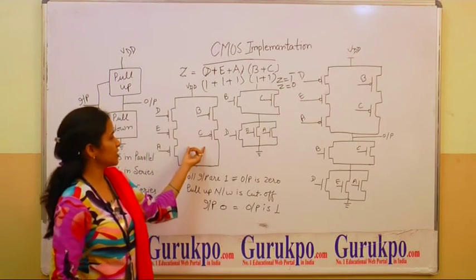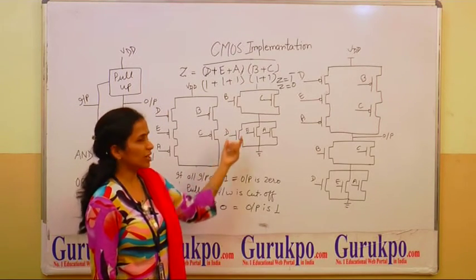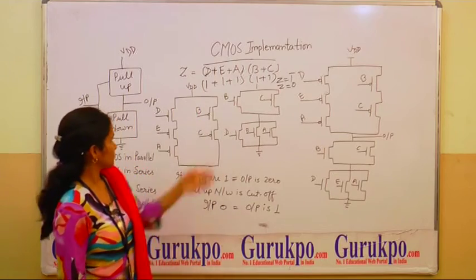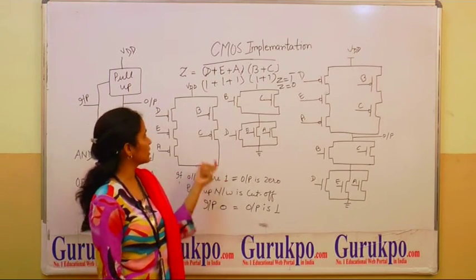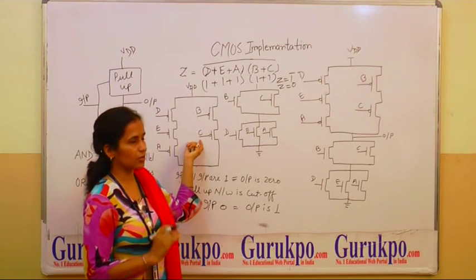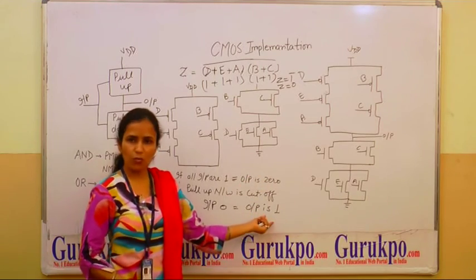Because an NMOS transistor, when we take inputs are 1, then pull-up network is cut off and pull-down network is ON. But output is always 0. And when all the inputs are 0, then pull-up network is always in ON condition and pull-down network is always in cut off condition. Then output is always 1.